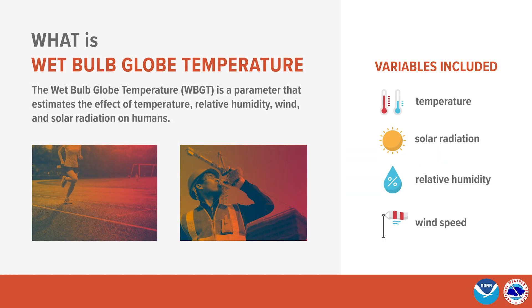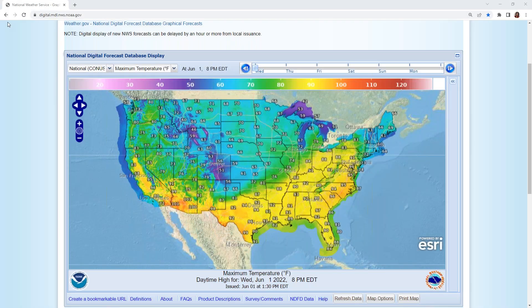High temperatures and humidity can harm the human body by limiting its ability to cool. The National Weather Service provides forecast tools like the Wet Bulb Globe Temperature, or WBGT, to inform decision-making during periods of hot weather. Wet Bulb Globe Temperature is a measurement of heat stress that takes factors like air temperature, solar radiation, humidity, and more into account. Let's explore where to find Wet Bulb Globe Temperature forecasts and how to use them.